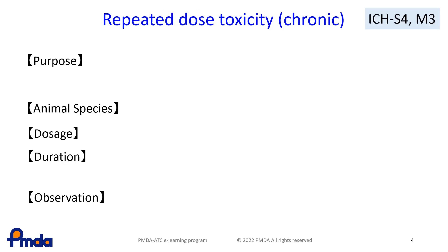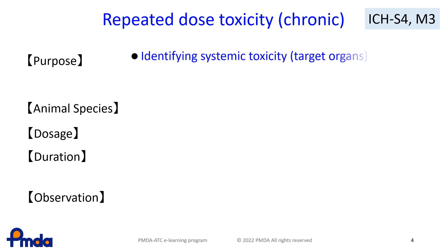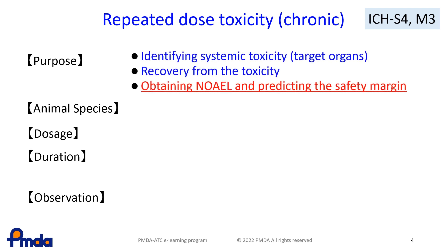Let's take a look at some typical toxicity studies. First is repeated dose toxicity, which complies with ICH-S4 and M3 guidelines. The purposes of repeated dose toxicity studies are to identify systemic toxicity of a drug, especially on the target organs, confirm recovery from the toxicity, and determine the NOAEL.